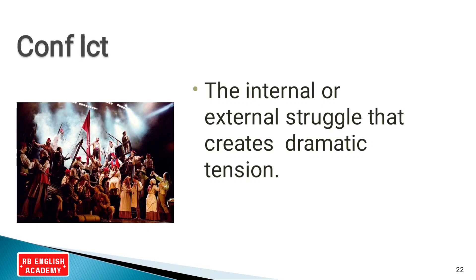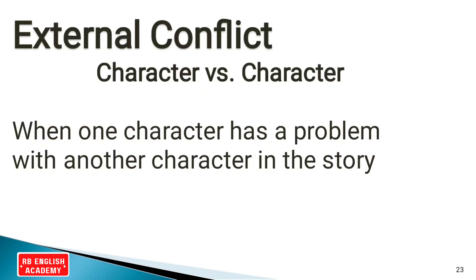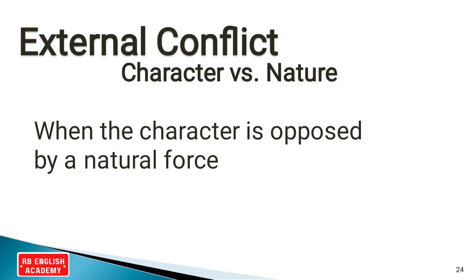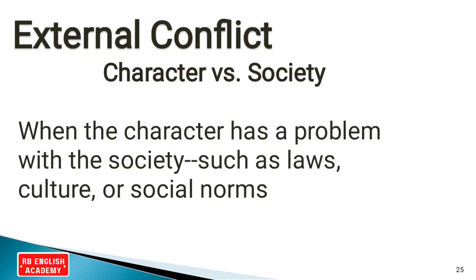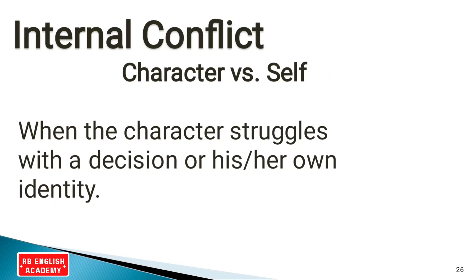External conflict includes: character versus character — when one character has a problem with another, like a hero and villain; character versus nature — when the character is opposed by a natural force; and character versus society — when the character has a problem with the society such as laws, culture, or social norms. Internal conflict is character versus self — when the character struggles with a decision or their own identity.